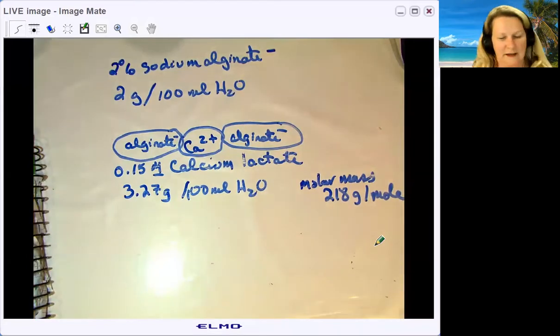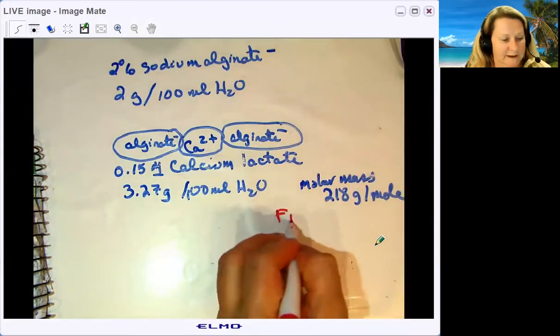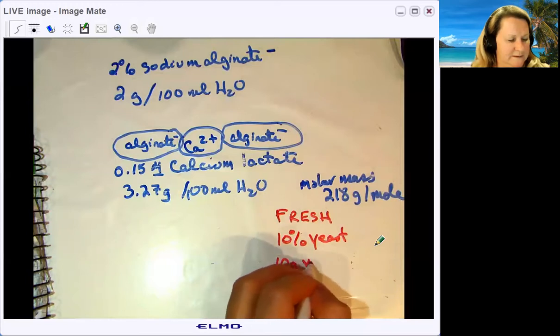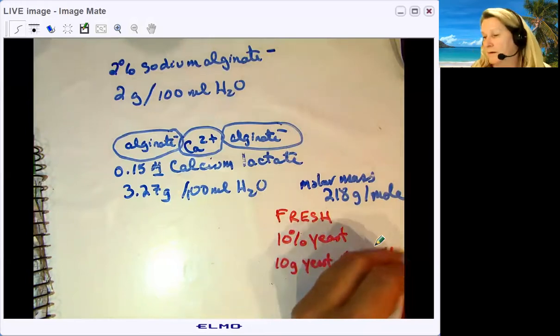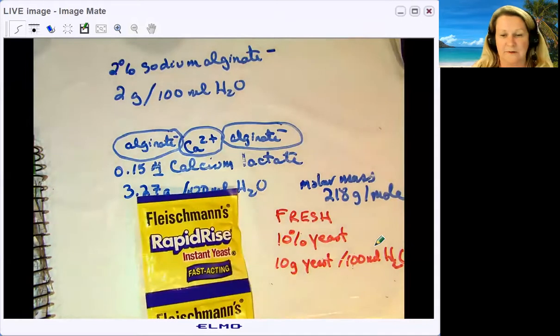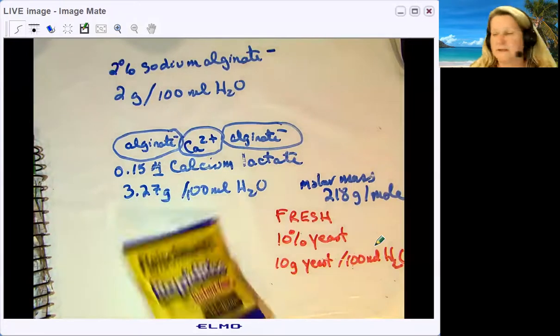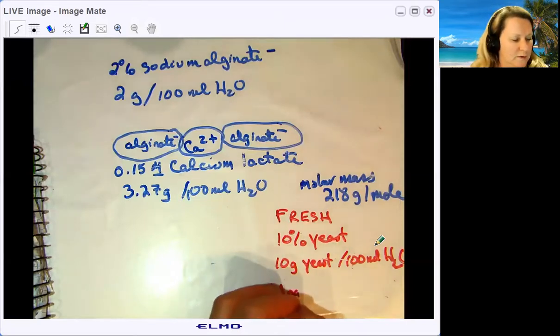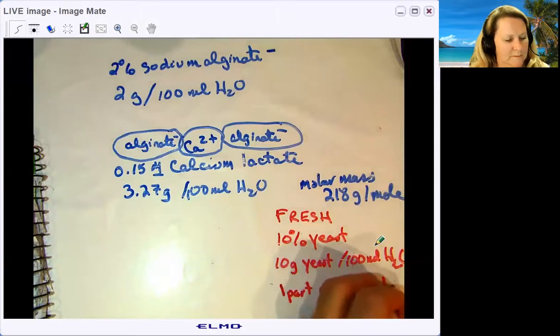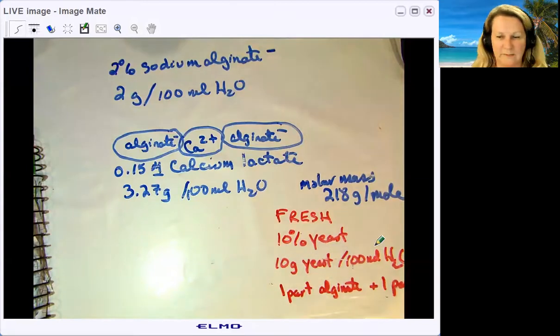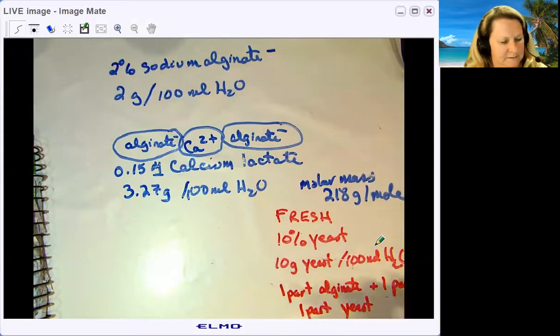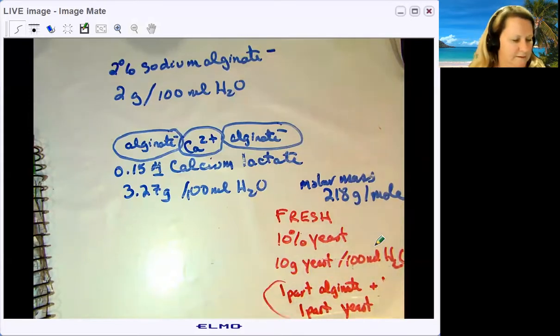The third solution you need must be made up fresh on the morning of the lab. You need a 10% yeast solution—that's 10 grams of yeast per 100 mL of water. I use Fleischman's rapid rise dry yeast from the grocery store. I'm not going to make that up today. I'll wait until the morning we do the lab because you want it fresh. When you start the lab, you're going to do one part sodium alginate solution plus one part yeast solution. Pour them in a cup or beaker and mix them together—a one-to-one volume ratio.